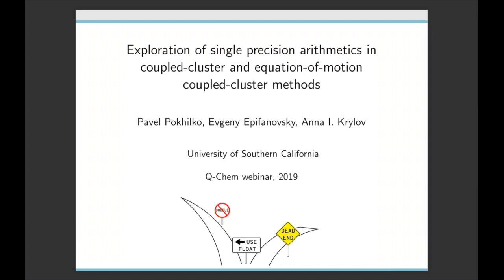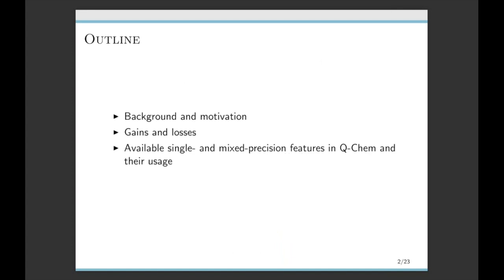Thanks for the kind introduction. So today I will talk about single precision in correlated methods, specifically in the coupled cluster and equation-of-motion coupled cluster methods. I will start with background and motivation — why we are interested in single precision and what it is. I will talk about what we can gain and what we can lose when we switch to single precision or combine different types of precision. Then I will show which methods we implemented in QCAM and how to use them with typical usage cases.